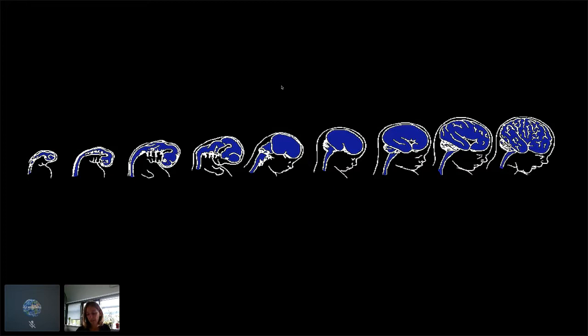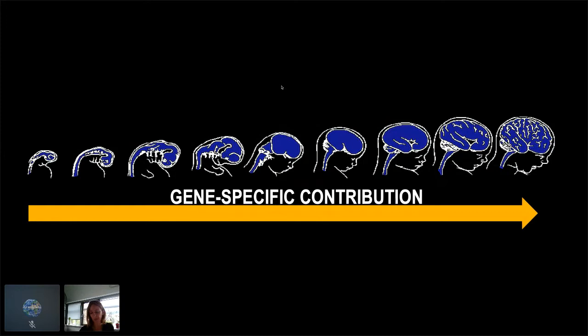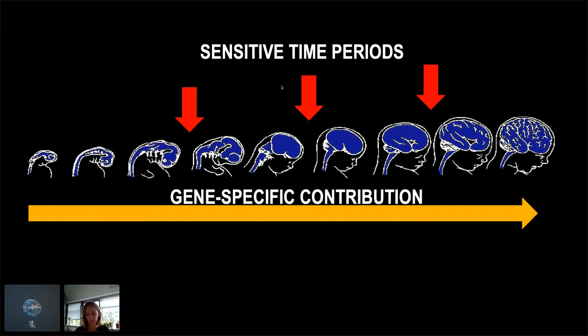The questions we try to answer include: what are those genes doing in the brain? We have about 20,000 genes, and for most we have very little information about their function in brain development. We also try to understand what the sensitive time periods are that are affected by genetic mutations — some mutations may have effects at a very specific time point, while others have effects throughout life — which ultimately requires different approaches to treatment.